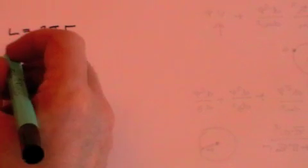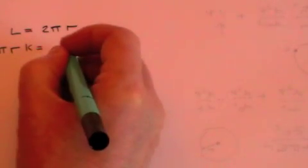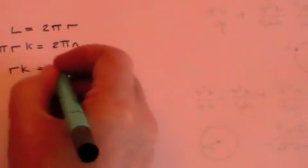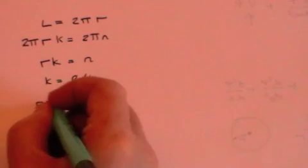What is L? L is the distance round the circumference of the circle. And that is simply 2 pi R, where R is the radius of the circle, the distance between the electron and the proton. So 2 pi R times k is 2 pi M. And that means that R times k equals M. But in a previous video, I have shown that k is equal to p over h bar. And therefore, R times p over h bar equals M.